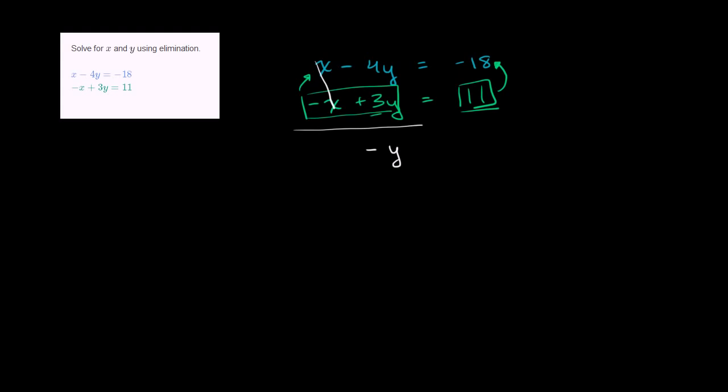And then that's going to be equal to, and remember, we can still say equal because we're essentially adding the same thing to the right-hand side that we're adding to the left-hand side. 11 is the same thing as negative x plus 3y. All right, 11 plus negative 18 is negative 7.